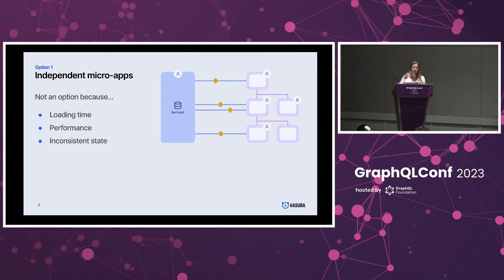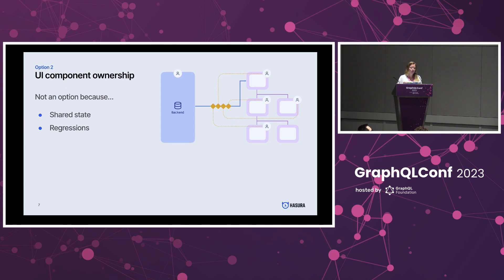Even worse, sometimes if you switch a tab there's a reload, because it's actually a different application loading. And even worse than that, it can lead to inconsistent state if data is updated in one component but not in the other. So we said no, this is not a good option. Option number two was UI component ownership — one application, but teams are responsible for specific UI components. This is also not ideal, because there's a lot of shared state between components, and data loading responsibility always falls on the root component, which then has to be manipulated by different teams, again leading to regressions. We also want independent ownership of these UI components.